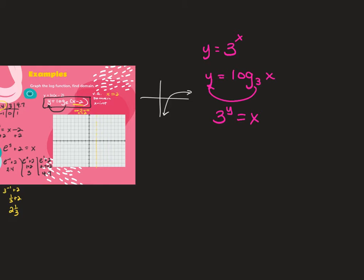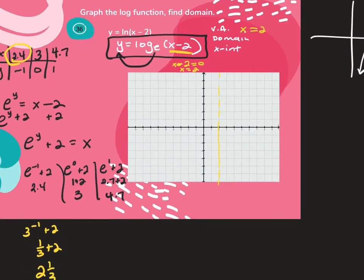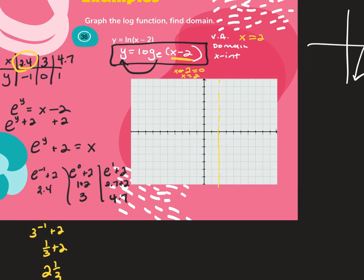If we're solving for y, how come we're plugging in for y? Because when you convert log to exponential, the y becomes the exponent and you can't plug into the exponent directly. So in log form you solve for x after putting it into exponential — you always put log into exponential form first, and then technically you always solve for x.